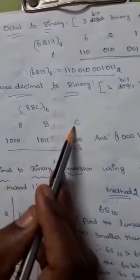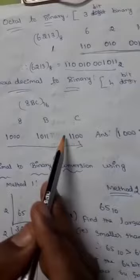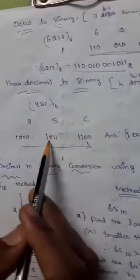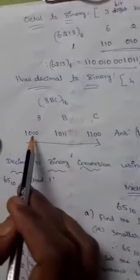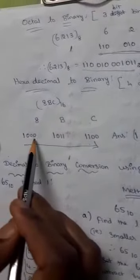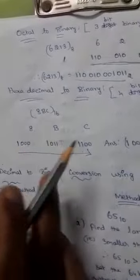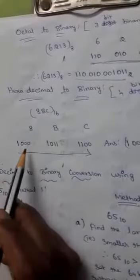For the given number C we have to return the 4 bit equivalent 1, 1, 0, 0 and B 1, 0, 1, 1. For A, 1000. From the table only we have written this binary numbers.